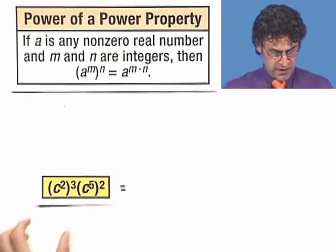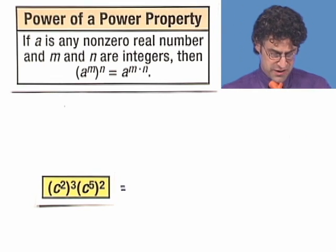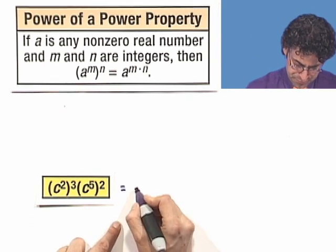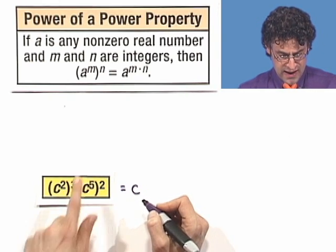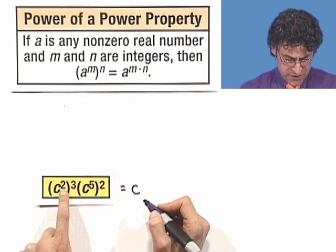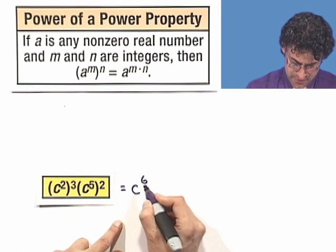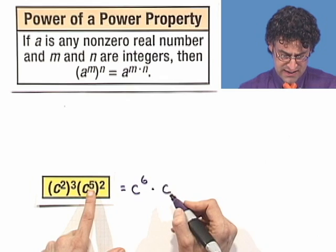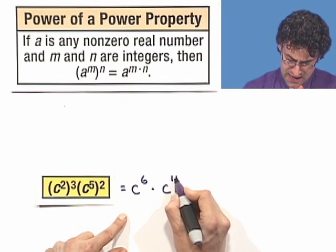Well, what I'm going to do here is deal with the parentheses. Remember, orders of operations, we're going to deal with these parentheses. So what happens here? Well, this term right here is going to be c to the, and I can use this fact, multiply the two by the three and I get six, times c, and again I take the five and multiply it by the two and I get ten.